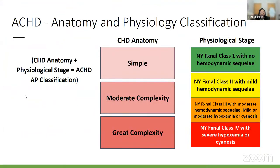When assessing and classifying ACHD patients, you must consider anatomy and physiologic stage. Anatomy may be simple — such as a simple ASD — moderate complexity, or great complexity such as patients with Norwood procedure or Fontan circulation. The physiologic stage is a functional class: stage A with no hemodynamic sequelae, moving all the way to functional class four with severe hypoxemia or cyanosis. Patients with Fontan physiology may live at an O2 of 88% with baseline cyanosis, placing them at higher clinical risk than stage one patients.